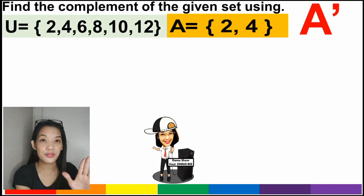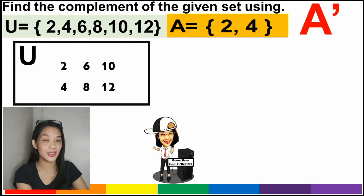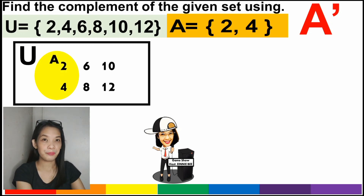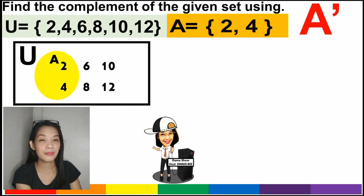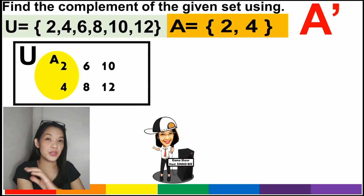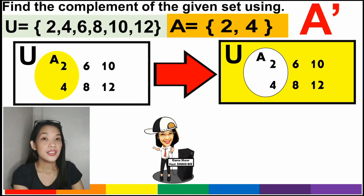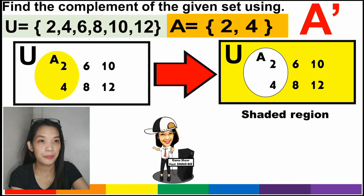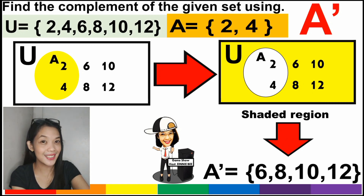To get the complement of A using a Venn diagram, we must illustrate our universal set, which has the elements 2, 4, 6, 8, 10, and 12. We identify the elements of A: 2 and 4. To illustrate the complement of A, remember its definition — the elements found in the universal set but not in the given set. Everything in the universal set but not in set A is shown as the shaded region. The complement of A is 6, 8, 10, and 12.